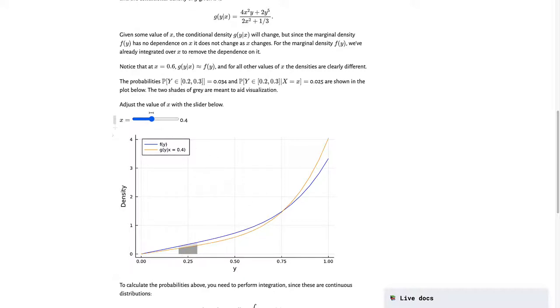This orange line will literally change as you move this slider, and you should see that as a visual representation of the conditional density of y depending on the value of x. You get a different density of y dependent on the value of x that you pick.